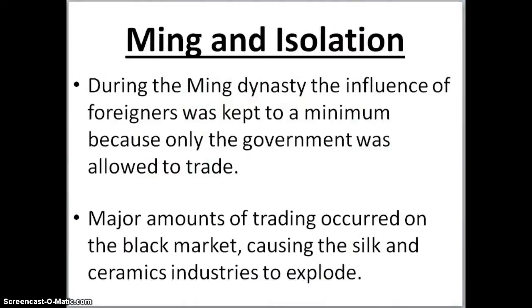During the Ming Dynasty in isolation, the influence of foreigners was kept to a minimum because only the government was allowed to trade. Major amounts of trading are going to occur on the black market, which is going to cause the silk and ceramics industries to explode. The black market is an illegal market — European people really wanted silk and porcelain, that fine china, those ceramic plates and bowls, and the only way they could get it was to purchase it on the black market.